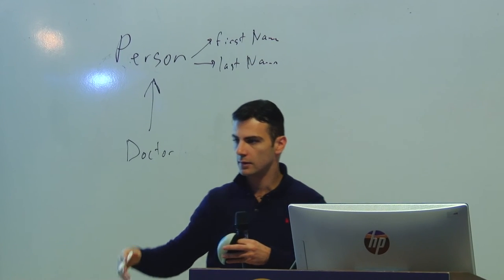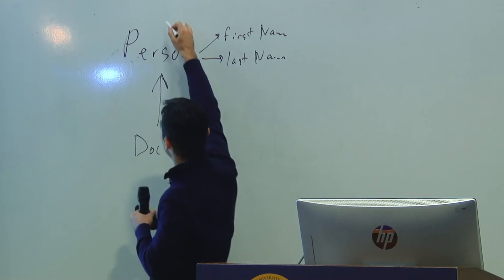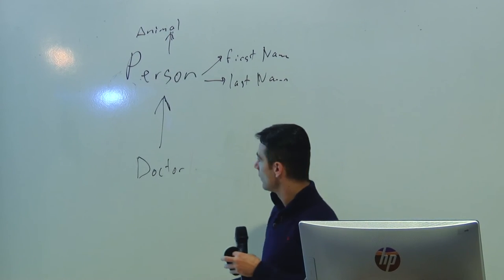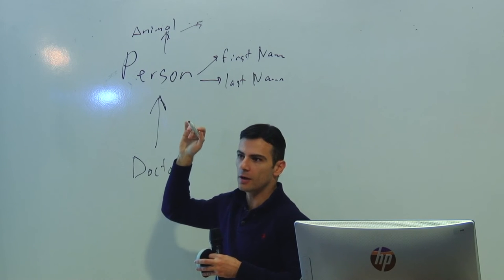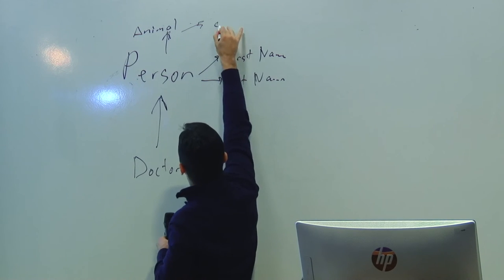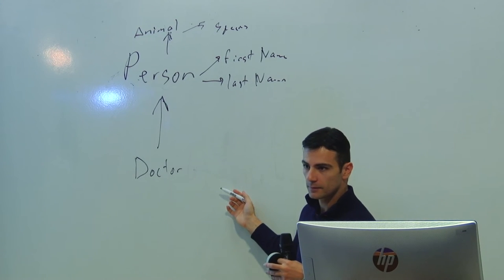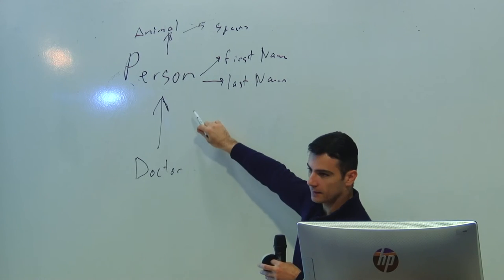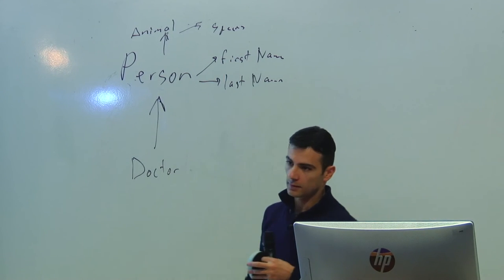A question: can a Person inherit from something else too? Yes. For example, if Person extends Animal, and Animal has a 'species' attribute, then Doctor would also have species through the chain. If you need to access the grandparent's attributes, super.species would go up the chain. Super means 'the stuff above me' — your parent's reference.